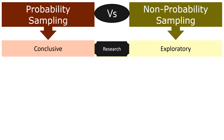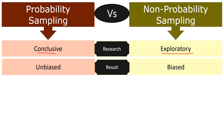Probability sampling is used when the research is conclusive in nature, whereas when the research is exploratory in nature, non-probability sampling should be used. Regarding result: as probability sampling is based on randomization or chance, it is free from biases of the researcher. Conversely, non-probability sampling is based on the judgment of the researcher regarding the selection of elements, and so it is biased.